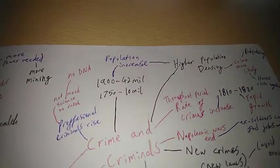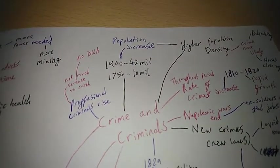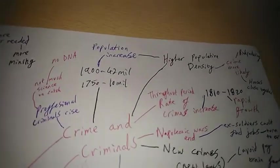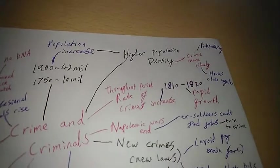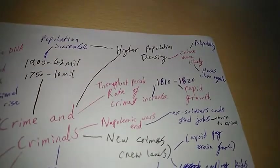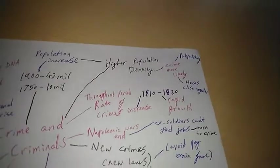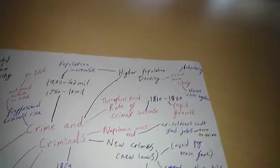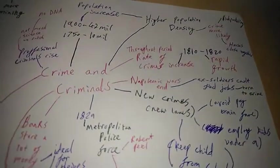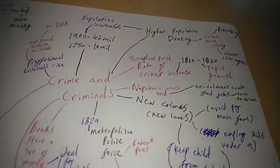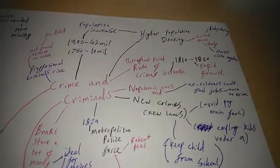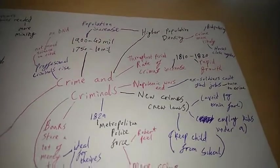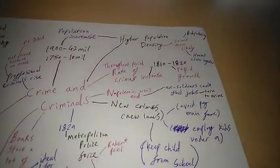Also the population increased. In 1750 there were 10 million people and in 1900 there were 42 million people. This led to a higher population density which made crime more likely with things such as pickpocketing. Houses were close together so people were more likely to burgle from their neighbours. In some places in this period rates of crimes increased rapidly between 1810 and 1820.